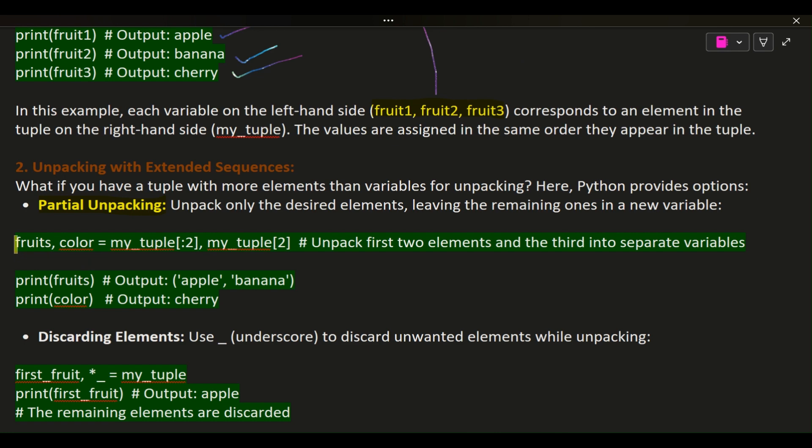fruits, color = my_tuple[2], my_tuple[2] # Unpack first two elements and the third into separate variables.